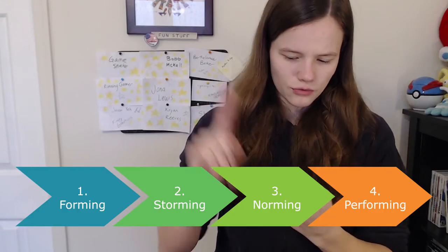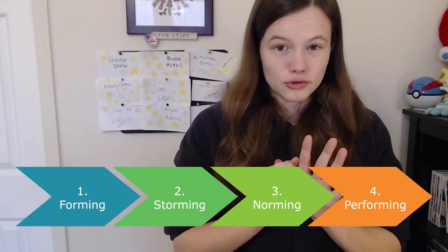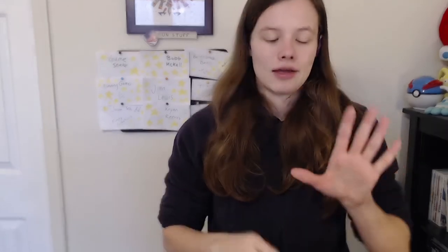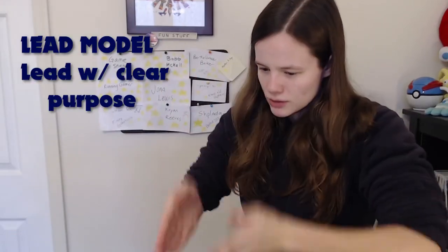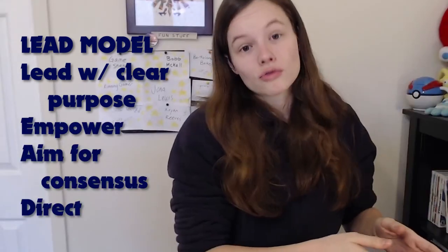The last part to cover is the LEAD model and the team life cycle. The team life cycle goes: forming, storming, norming, performing, and then adjourning — though it's like a circle and you don't always adjourn; sometimes it rotates between those four stages. Forming is when the team is just created. Storming is where everyone is disagreeing. Norming is where everyone starts to understand how the team works together. Performing is the most effective stage. The LEAD model is where you lead with a clear purpose, empower your people, aim for consensus, and direct the team.